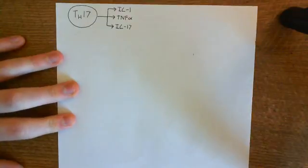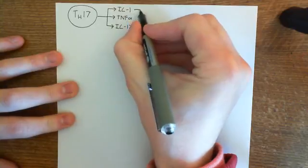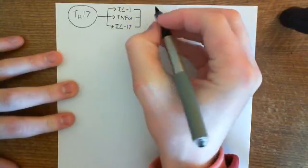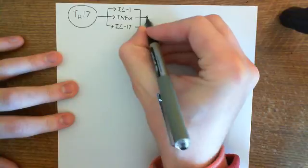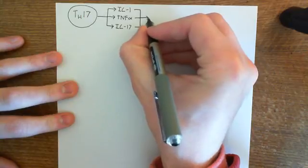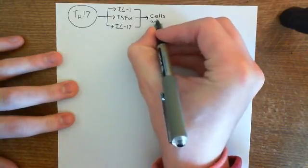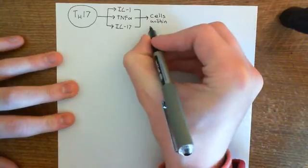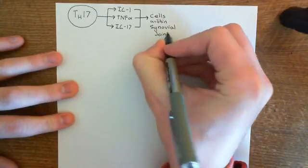Interleukin-1 and TNF-alpha are going to cause type 2 activation of endothelial cells and contribute to the propagation of the synovitis. But these T helper 17 cells are also going to start producing something new: interleukin-17. So these three cytokines are therefore going to go up in the interstitial fluid of the synovium and also in the synovial fluid, and what they do is they activate cells that make up the synovial membrane and also cells within the synovial fluid to produce two other molecules.